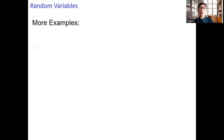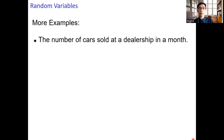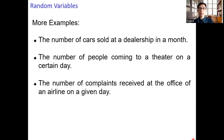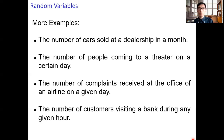Let's take a look at more examples of discrete random variables: the number of cars sold at a dealership in a month, the number of people coming to a theater on a certain day, the number of complaints received at the office of an airline on a given day, and the number of customers visiting a bank during any given hour.